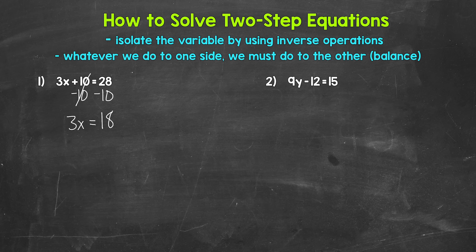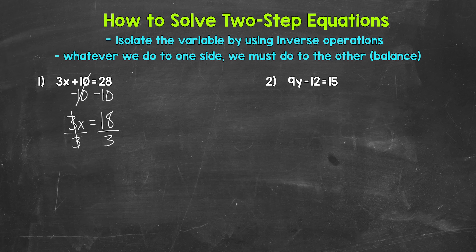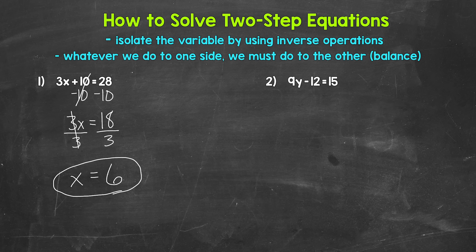So now we have 3x equals 18. We are multiplying x by 3, so we need to undo that. The inverse operation of multiplication is division. So let's divide the left side by 3 — whatever we do to one side, we must do to the other — so divide the right side by 3 as well. On the left side, we are multiplying by 3 and dividing by 3, so these 3s cancel each other out. Our variable x is isolated, so x equals 18 divided by 3, which is 6. x equals 6, and that's our solution.